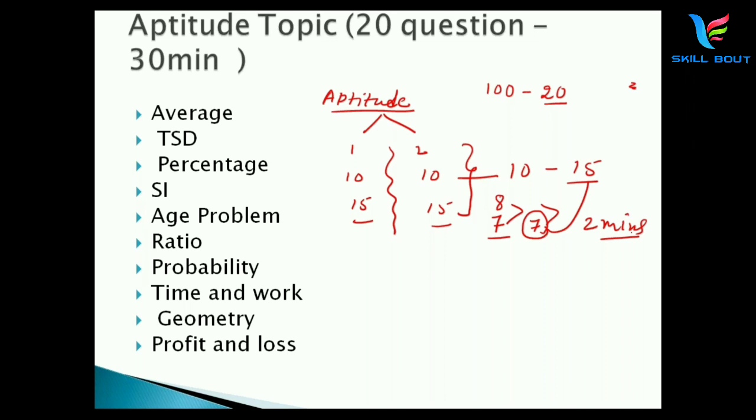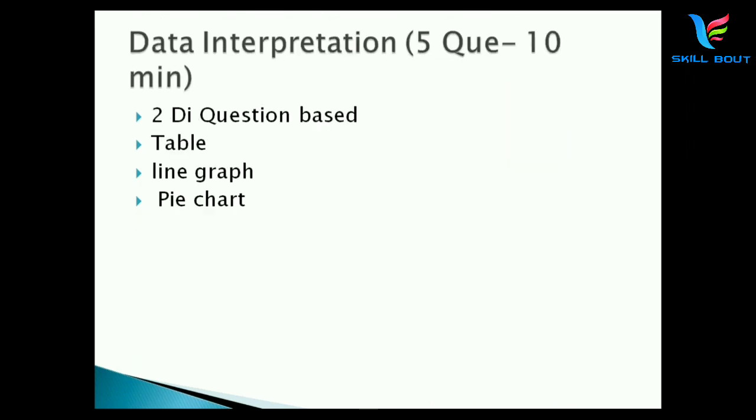Topics include average, time-speed-distance (TSD), percentages, basic SI, age problems, ratios, probability, time and work, geometry, and profit and loss. Geometry will be about mensuration - area and surface area questions. If you're not confident in a particular topic, ignore those questions. I hope you understand about these 20 questions with 30 minutes separated into two sections.